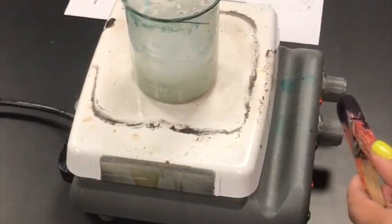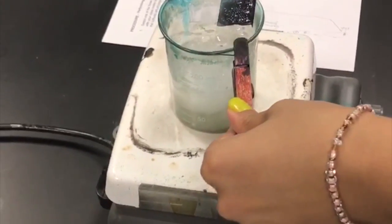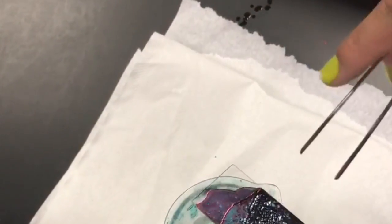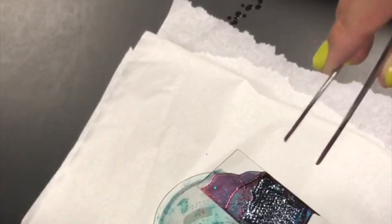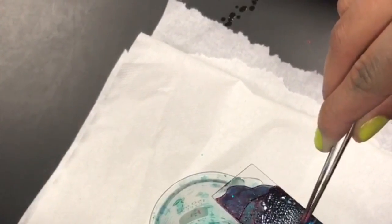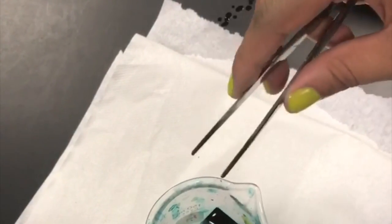After your slide has been steaming for about 5 minutes, you're going to use your clothespin to remove it from the steam. And you'll turn that off. Then you're going to use forceps to remove the paper towel that is on the smear. And you are going to discard it into a beaker, not into the sink.